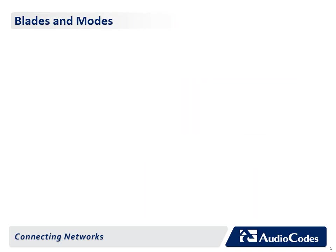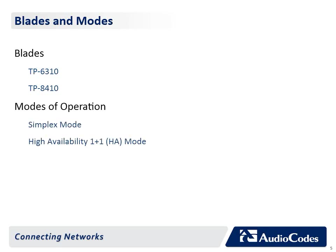Two types of blades can be hosted on the Mediant 3000: TP6310 blades or TP8410 blades. The device can operate in one of the following modes. Simplex mode provides only one VoIP communication blade and one synchronization and alarm blade. High availability, one plus one, HA mode provides system redundancy. The device houses two VoIP communication blades, one active and one standby, two RTMs and two synchronization and alarm blades.